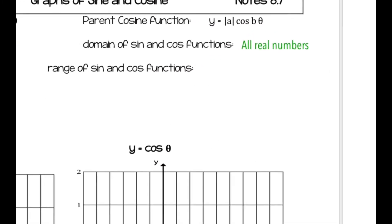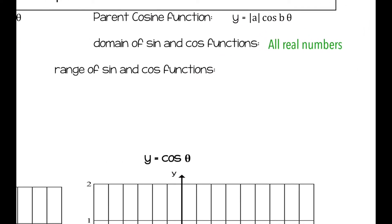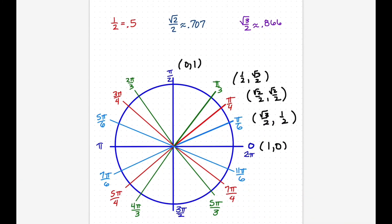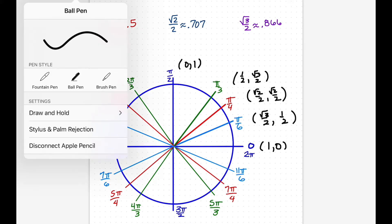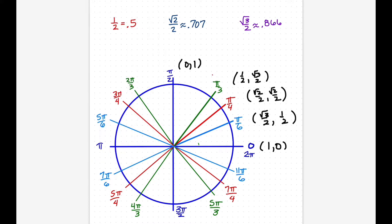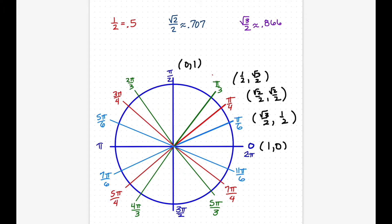The next one is the domain. All sine and cosine functions have a domain of all real numbers. If you think about the unit circle, it can cover any number of degrees — positive degrees for an infinite amount, and also negative degrees. That's why the domain is all real numbers, because it can be either positive or negative, any number of degrees or radians.